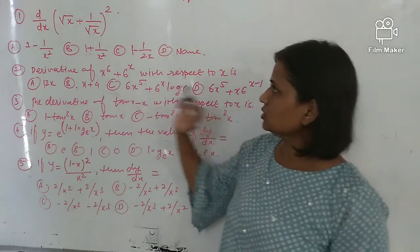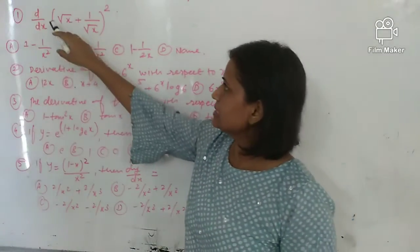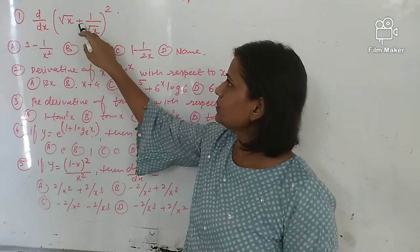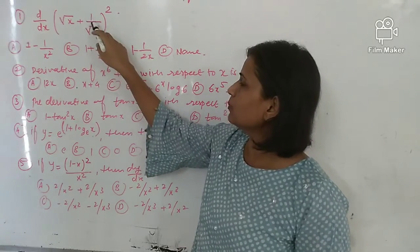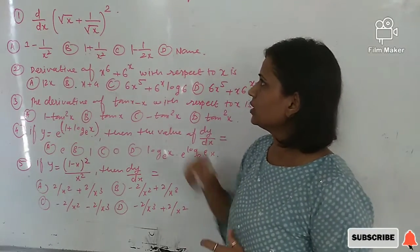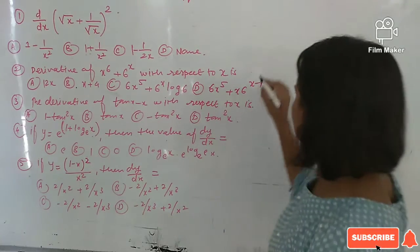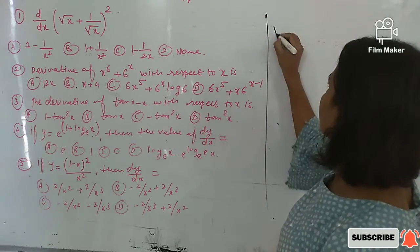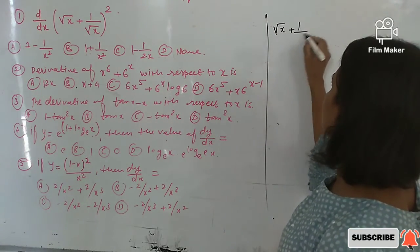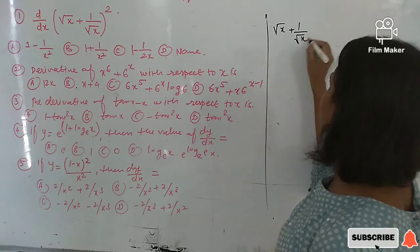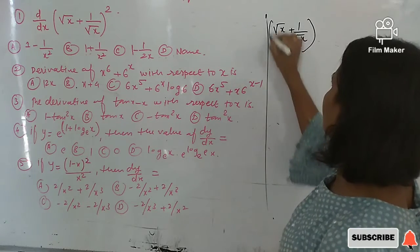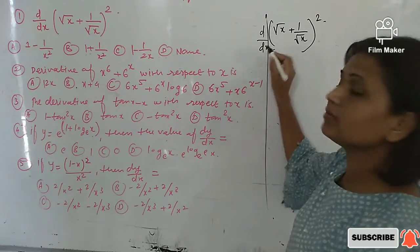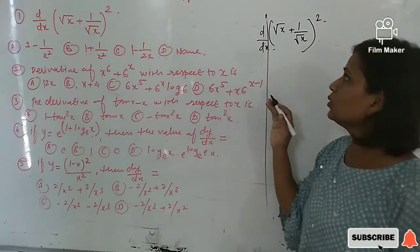First question: find d/dx of (√x + 1/√x)². The given expression is (√x + 1/√x)² and we have to find the derivative of this.